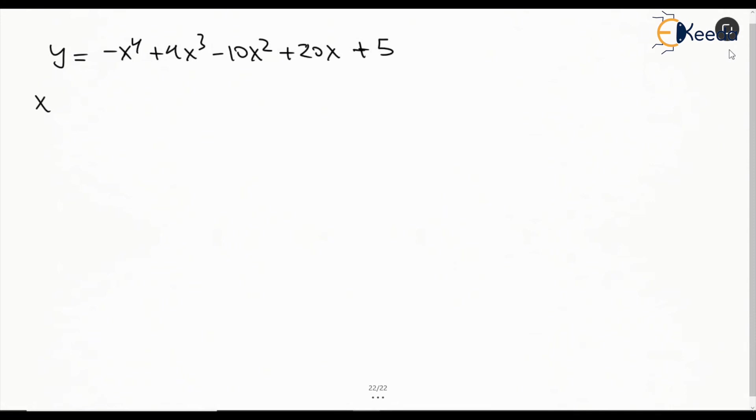At x=1, y becomes -1 + 4 - 10 + 20 + 5, which equals 18. This is the answer.